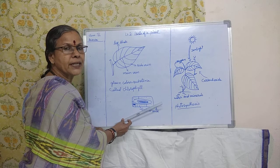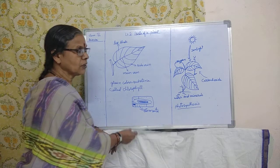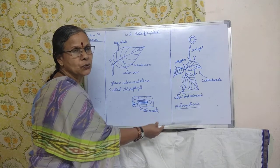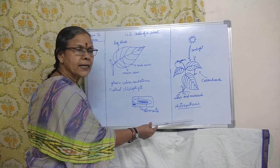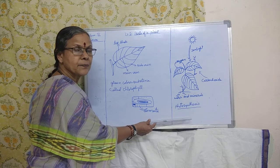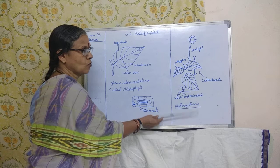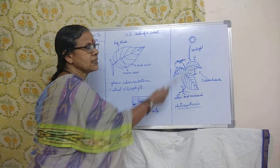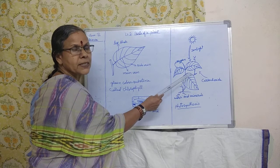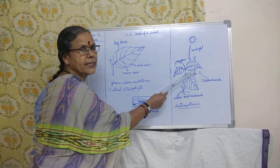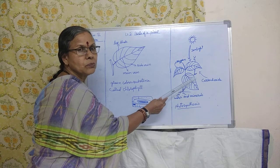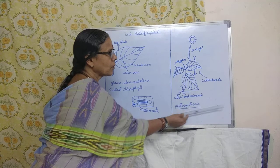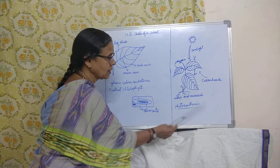These leaves make their own food. They collect three things. What does a plant need to grow? A plant needs water from the soil, carbon dioxide from the air, and sunlight to grow. Those are the three ingredients the leaves collect.